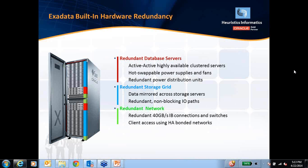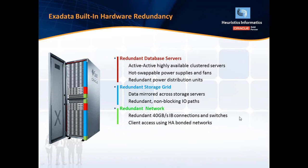All IO within the storage servers is redundant, so one database access request is not blocking other database requests. You are not compromising on performance while being able to put different types of workloads onto the same Exadata machine. And you've got the redundant network — every network component on the Exadata database machine is redundant using either bonded or IPMP configurations.